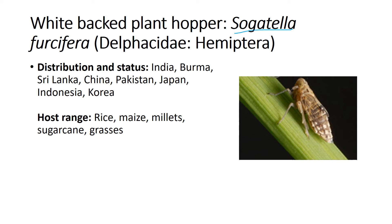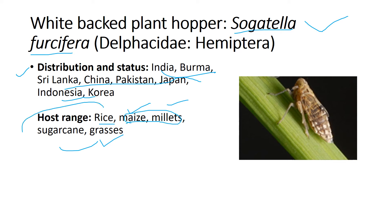The next pest is White Back Plant Hopper, biologically called Sogatella furcifera. For distribution, it is prevalent over the entire Southeast Asia and South Asia — India, Burma, Sri Lanka, China, Pakistan, Japan, and Korea. The host range includes rice, maize, millet, sugarcane, and grasses. The key difference from BPH is that WBPH additionally affects maize and millets, whereas BPH affects rice, sugarcane, and grasses.